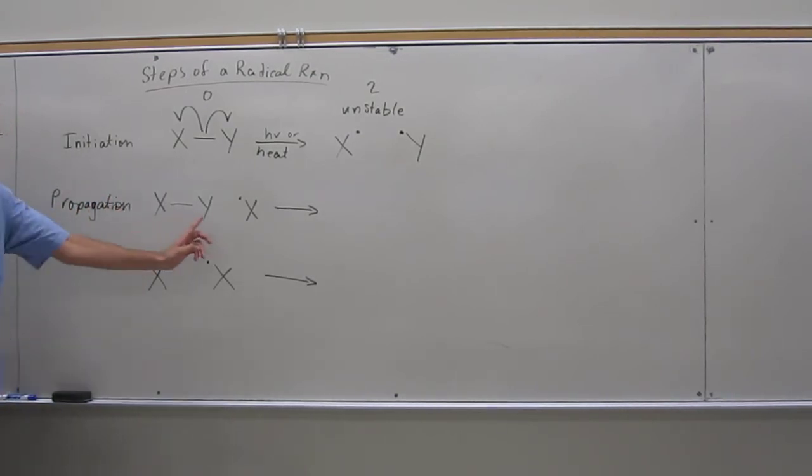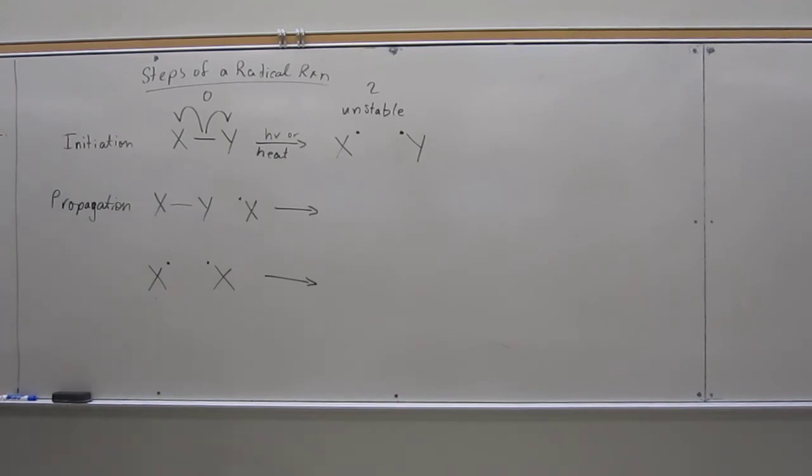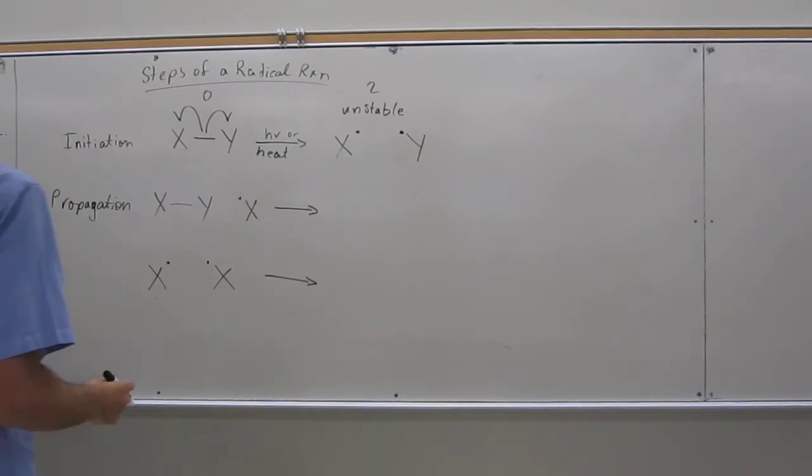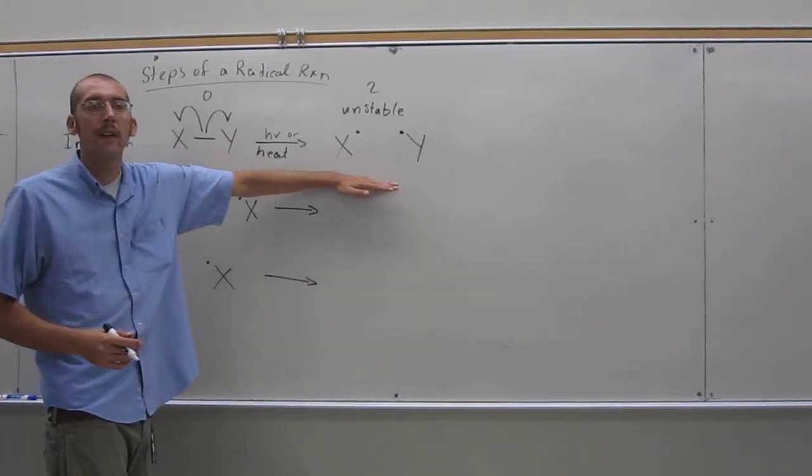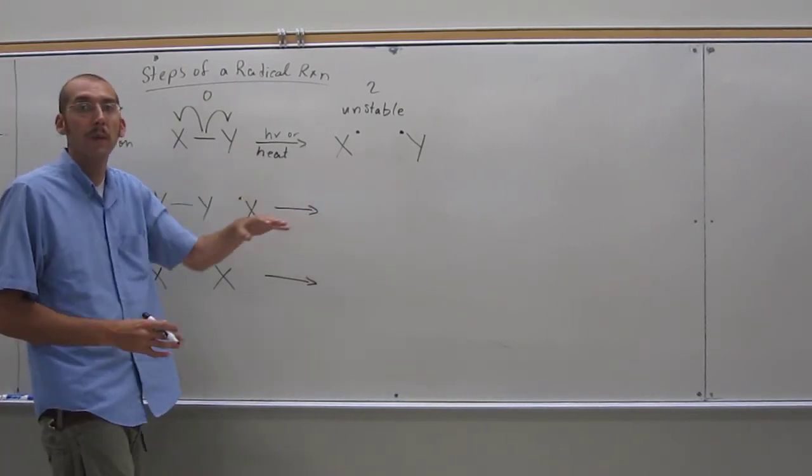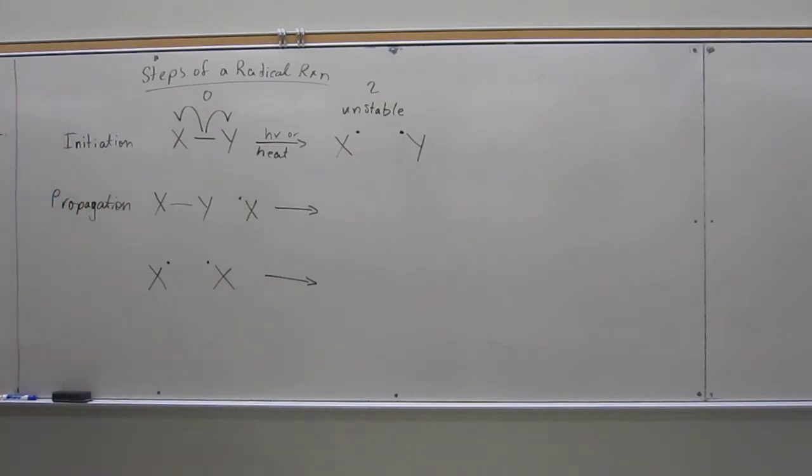Propagation. This is the step that happens most often in your radical reactions. So this will only generate a small number of radicals, maybe a couple of molecules, because most of them don't want to do that bond hemolysis, but some of them will get enough energy and do it. But then once they do it, they're like trying to attack everybody else.